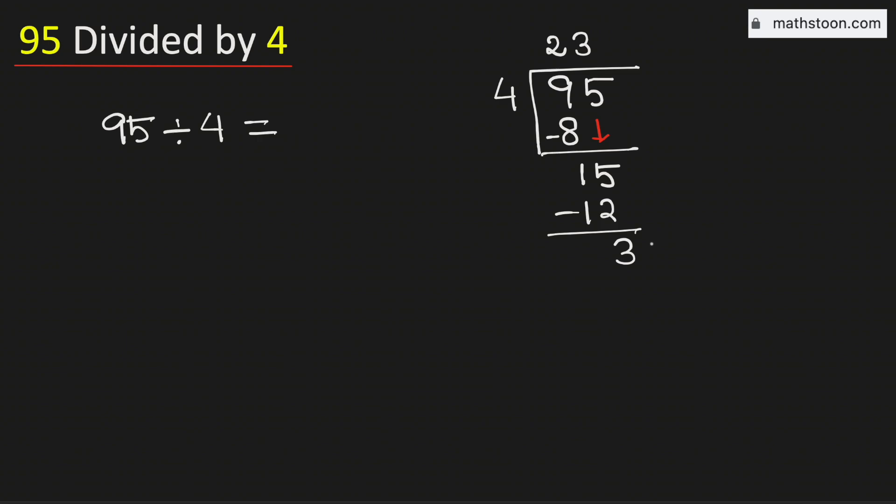So in this case, we will borrow 10. And for that, we need to put a decimal here. Now 4 times 7 is 28. Subtract and we get 2.